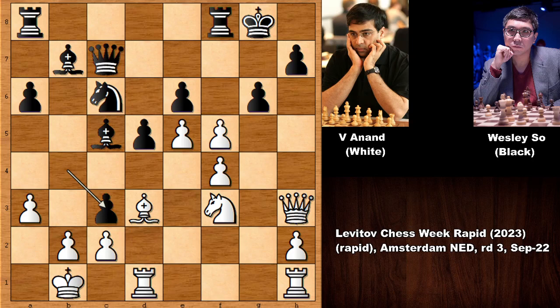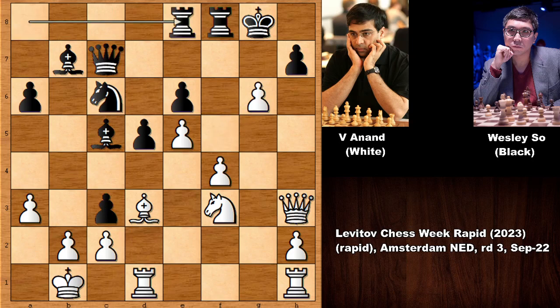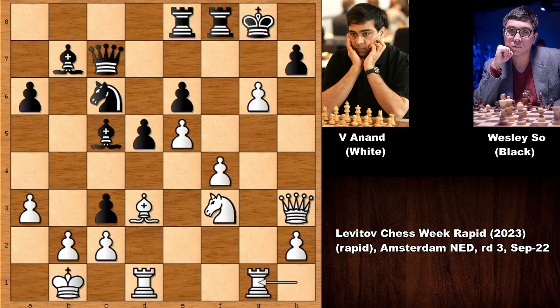Why did Anand sacrifice the piece? He played fxg6, and we have the rook over. Anand's next move was also spectacular. In this position, black is defending the e-pawn with the rook, and Anand played another fantastic move — rook from h to g1. What a move! Sacrificing the exchange, and after capturing the rook, the other rook joins the party.